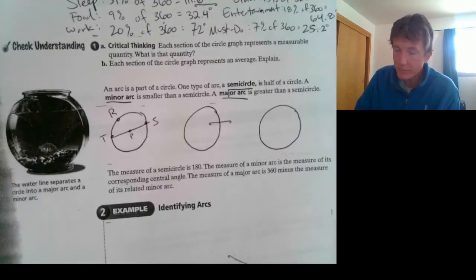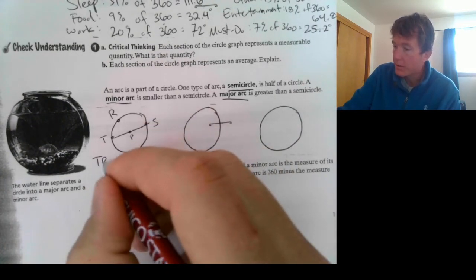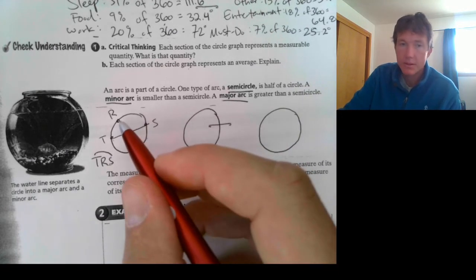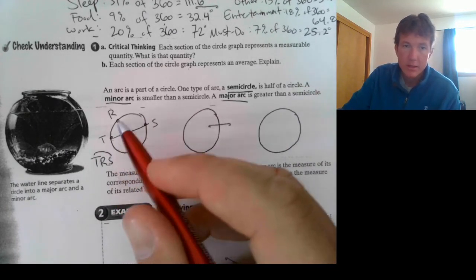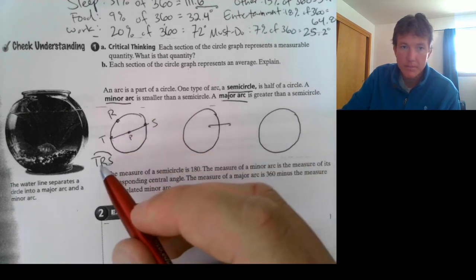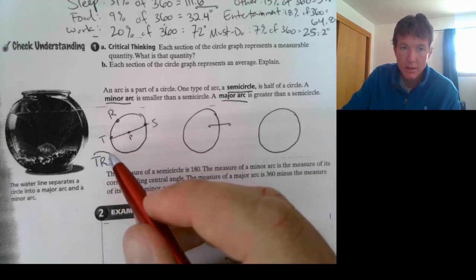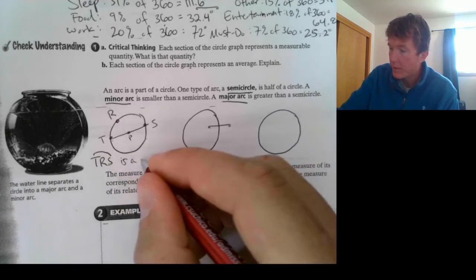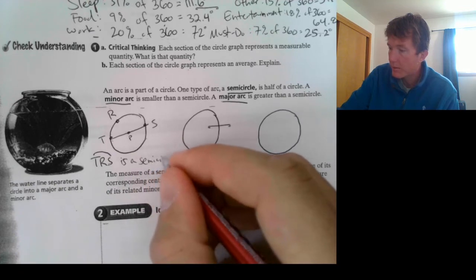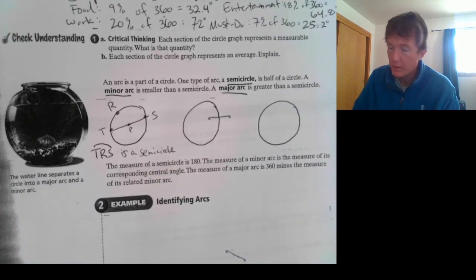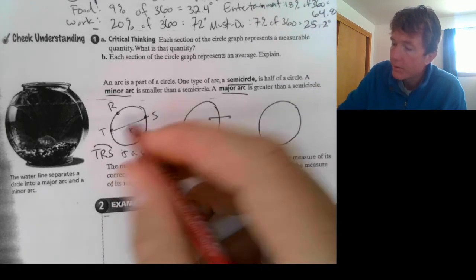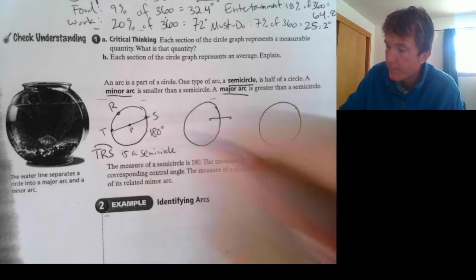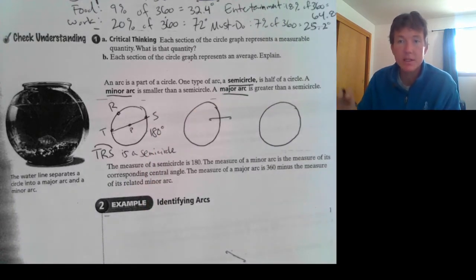And when you're calling an arc, you want to call it by the two endpoints and a point on the circle. And then I call it TRS. This is the order in which they appear. TRS. And then you have this little arc above the letters. So, this is a semicircle. Semicircle. The measure of this, the measure of TRS is 180 degrees. That's half a circle. 360 divided by 2 is 180.